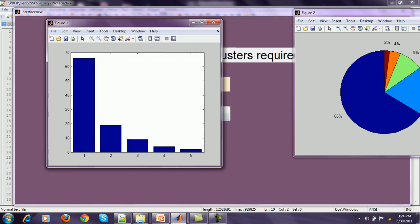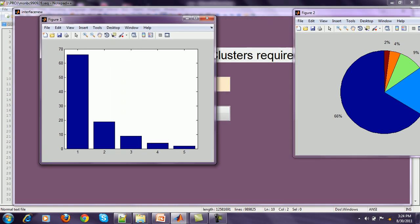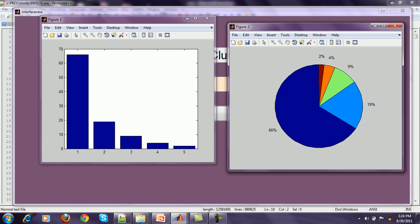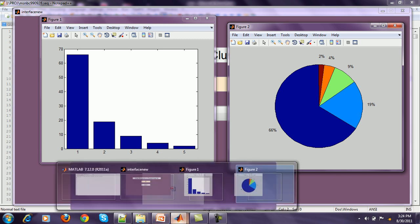This shows that there are large number of users in cluster 1 and least number of users in cluster 5.